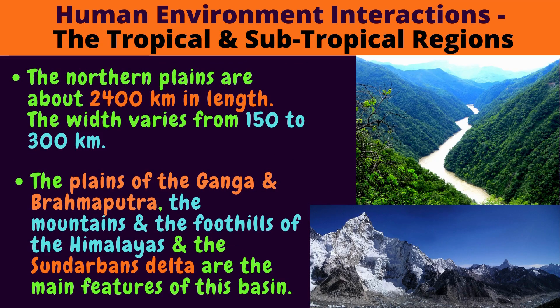The northern plains are about 2400 km in length. The width varies from 150 to 300 km. The plains of the Ganga and Brahmaputra, the mountains and foothills of the Himalayas, and the Sundarbans Delta are the main features of this basin. Can you see a picture of the Himalayas?